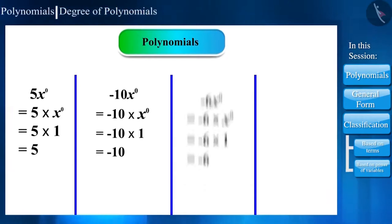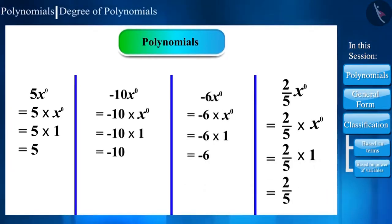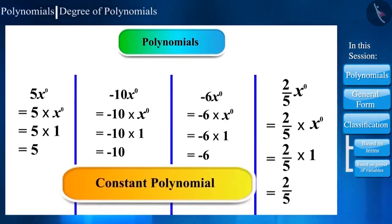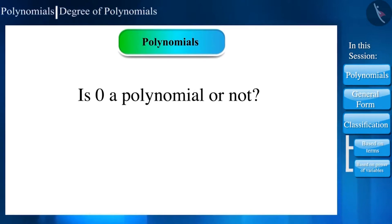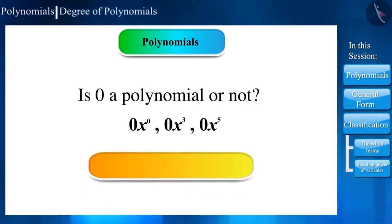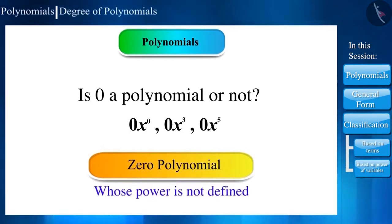Now, this means that constant or numbers are also polynomials. They are called constant polynomial. Is number 0 also a polynomial? 0 can be expressed as 0 times x to the power of 0 or 0 times x to the power of 3 or 0 times x to the power of 5 or as a power of any variable. So, 0 is called a zero polynomial whose power is not defined.